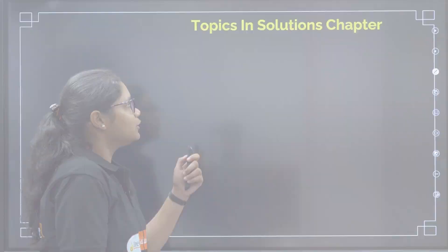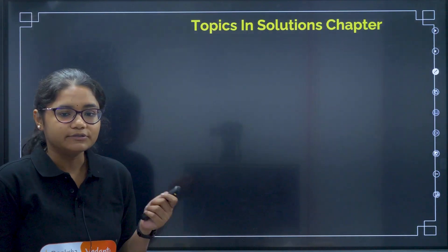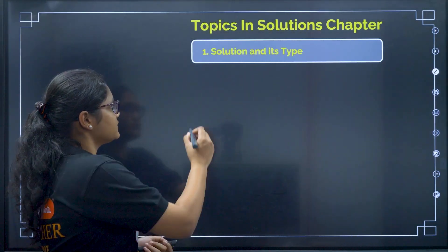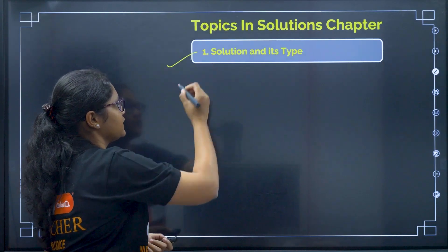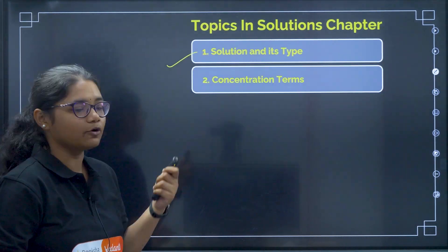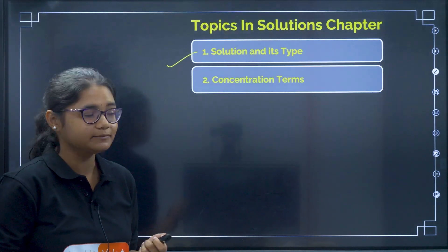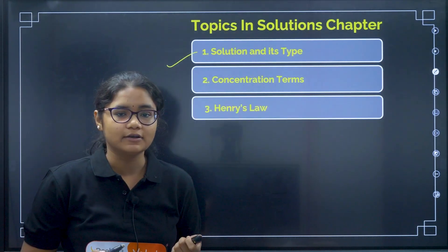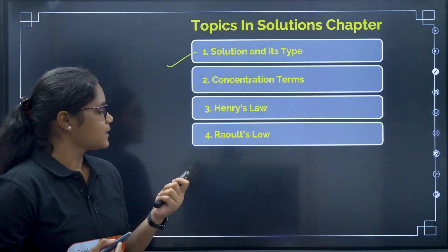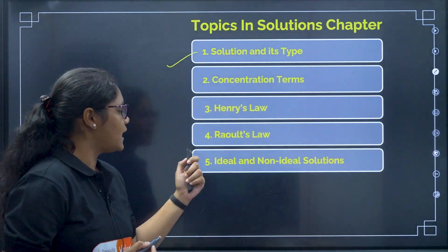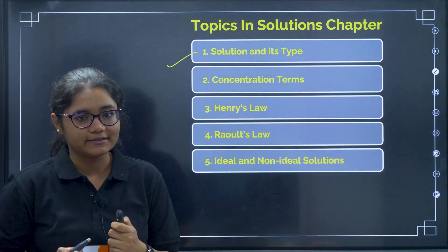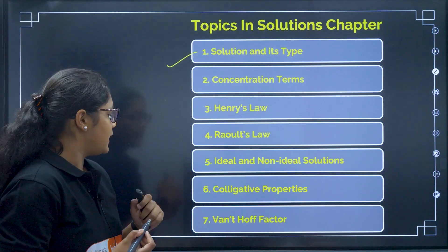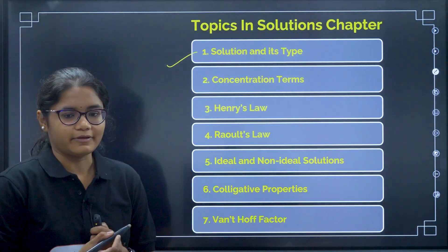Let us begin with the topics in the Solutions chapter. First is solution and its types. Then we have concentration terms. Then we have Henry's law. We have Raoult's law. Next is ideal and non-ideal solutions. Then colligative properties, and finally the Van't Hoff factor.